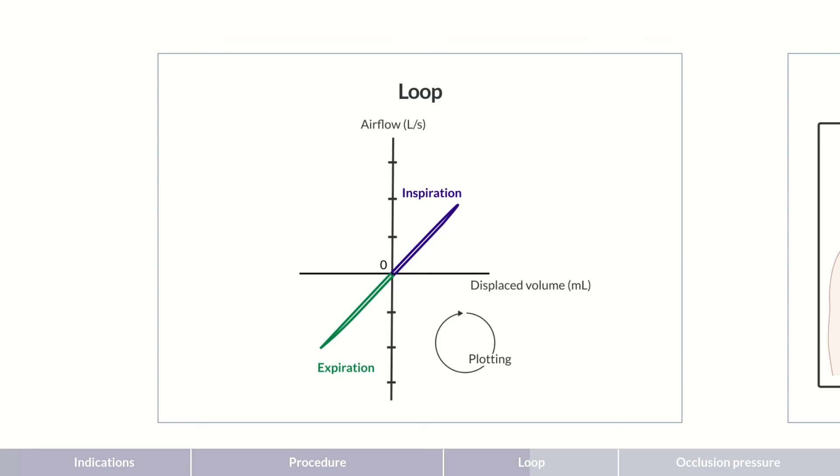Because of its shape, the diagram is also referred to as a loop. It visualizes the work of breathing, as it indicates which change in volume produces a specific airflow. In healthy individuals, the loop is an almost straight line.